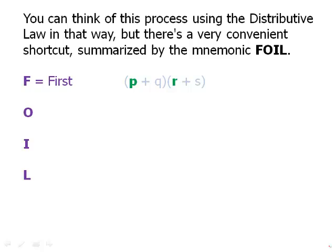So by first, we mean the product of the first two terms inside the parentheses, p and r. Each one of those is first in its own parenthesis. The product of the first terms, that's one of the terms. Then we look at the outer pair. That is to say, the very first in the first parenthesis and the very last in the last parenthesis. Those are the outer ones.